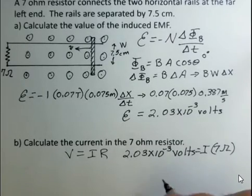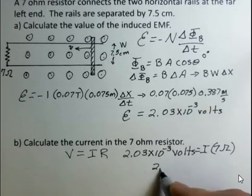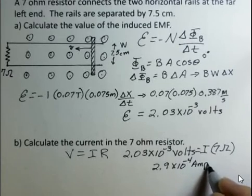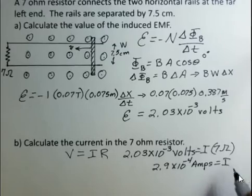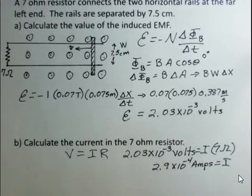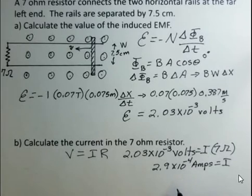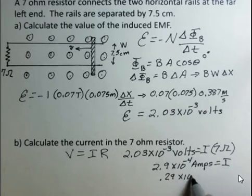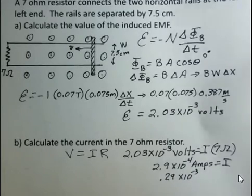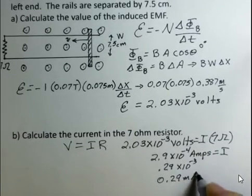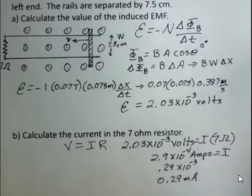When we divide volts by ohms, we'll get amps. Doing that, we get 2.9 times 10 to the minus 4 amps. That's the current in the 7 ohm resistor. If you don't like powers of 10, we can change this to 0.29 milliamps. That would be the current in the 7 ohm resistor.